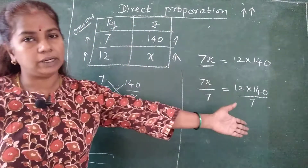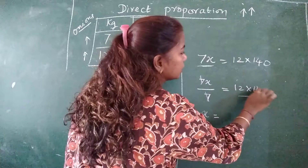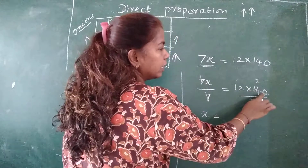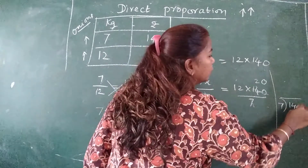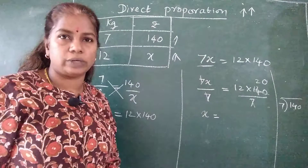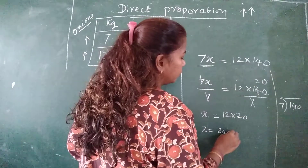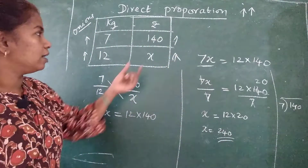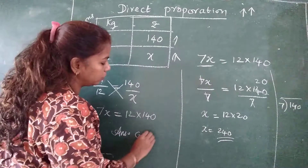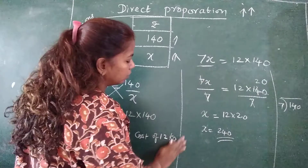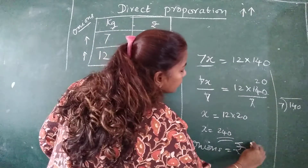What I am doing on the LHS, I will repeat on the RHS also. So 7 cancels, x is remaining. Now 140 divided by 7 equals 20, so what is remaining is 12 into 20. So x equals 12 into 20, which is 240. X is the cost of 12 kg of onions. So the answer is: cost of 12 kg of onions equals rupees 240.